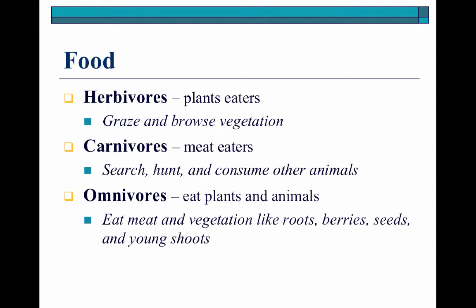The different feed types that these animals are going to consume while on rangeland are really going to help classify those animals into different types of grazers. Herbivores are going to be animals that eat plant and vegetation matter only — they're going to graze and browse on vegetation. Grazing tends to focus more towards our grass species and our forb species, whereas browsing refers to the ability to consume shrub materials or woody stemmed plants.